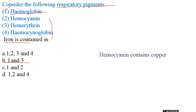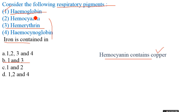Hemerythrin and hemocyanin — hemocyanin contains copper, while hemerythrin contains two iron atoms. Hemoglobin also contains iron. These are different types of oxygen-carrying pigments.